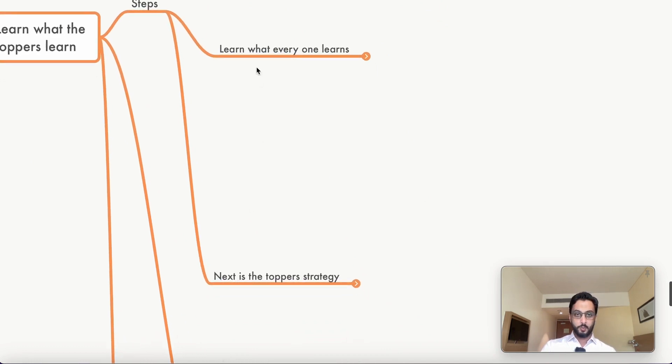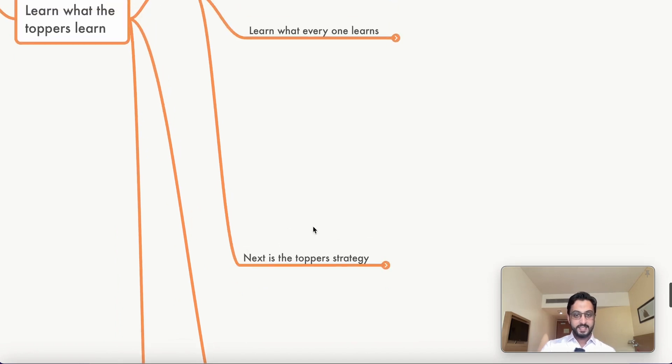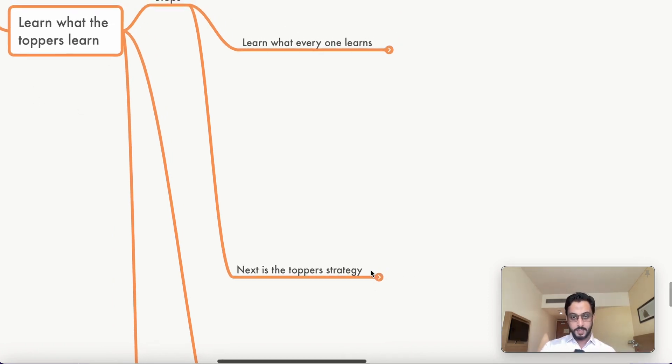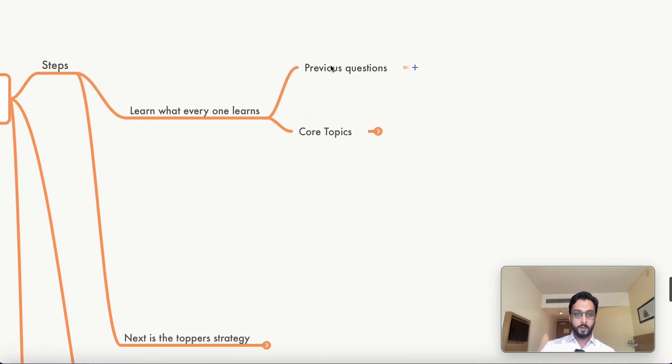The steps are two. Learn what everyone learns, which will include the topper definitely. And next is the topper strategy. So, this first one is everyone, including the toppers. Next is specifically what the toppers do, that's very important. Learn what everyone learns. It is what? Dental pulse, previous questions, dental pulse or dentist. The second thing is core topics. It's just not dental pulse. We have to go into a little bit of depth of that.